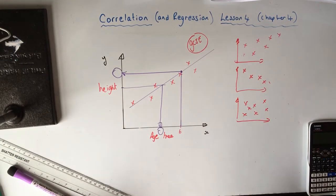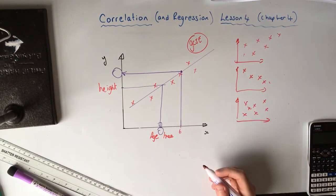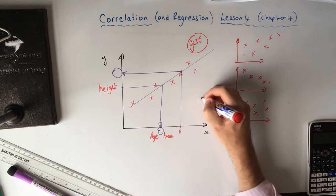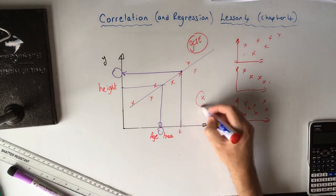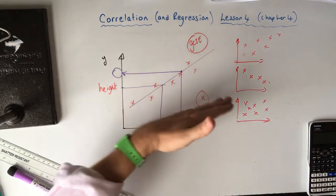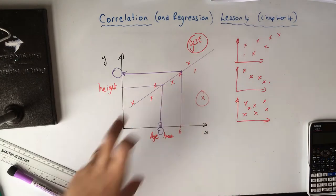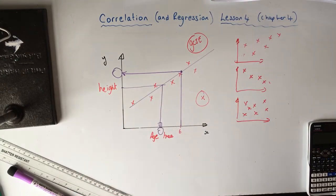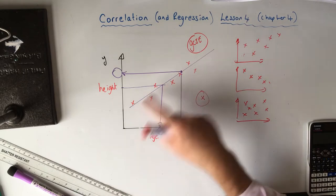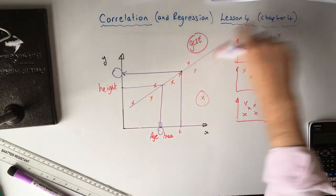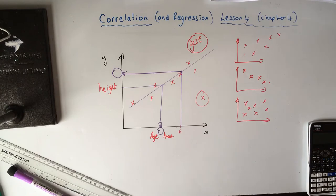Sometimes the question would tell you that a tree is eight years old with a height of, say, two metres. When you plot that, you get a point that is an anomaly — it doesn't fit the data. It would say make a comment about that, and you'd say it's a different sort of tree, maybe a slow-growing tree. That's what you're expected to do at GCSE.